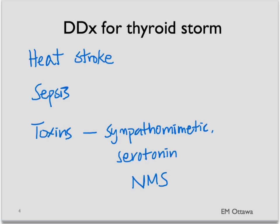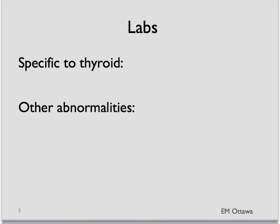If the history does not help you, sometimes laboratory studies might help sort this out. What labs would be helpful? Specific to the thyroid, if this is a thyroid storm or at least a hyperthyroid state, you would expect a high T3, high T4, and a low TSH.